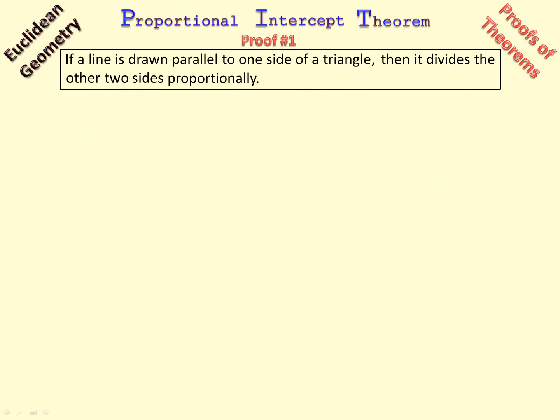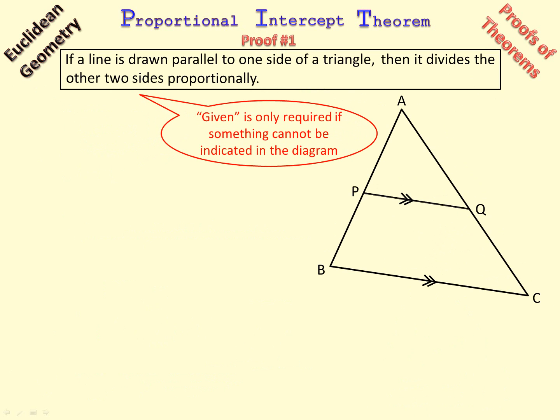So we can go into the proof now. There is our diagram. Now when you are doing a proof, any proof in Euclidean geometry, if you can show in the diagram something given, you don't have to put given in the proof. But if it cannot be shown in the diagram, then you need to write it. For example, if you have a circle where O is the center, you cannot show that O is the center easily in a diagram, so we write given O center.